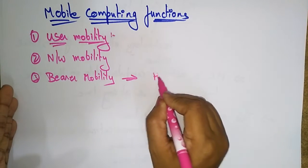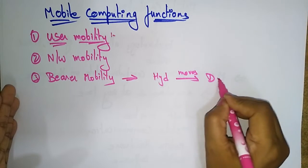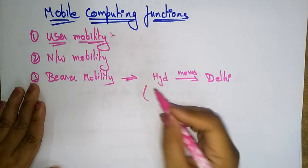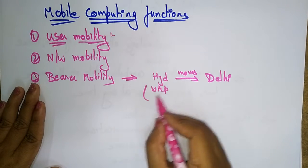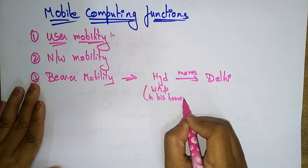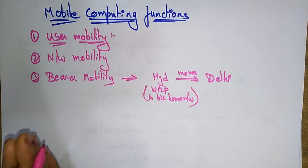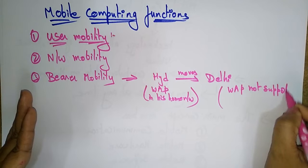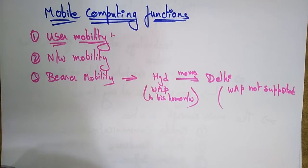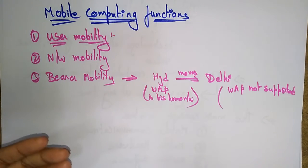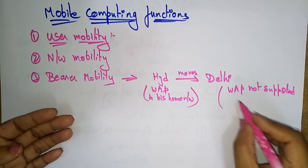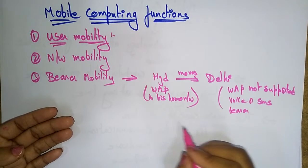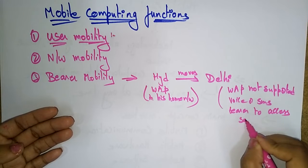For example, suppose you are moving from Hyderabad to Delhi. In your home network you have the Wireless Application Protocol (WAP), but in Delhi that protocol may not be supported. In that case, you switch to a voice or SMS bearer to access the same application, even though the Wireless Application Protocol is not supported.